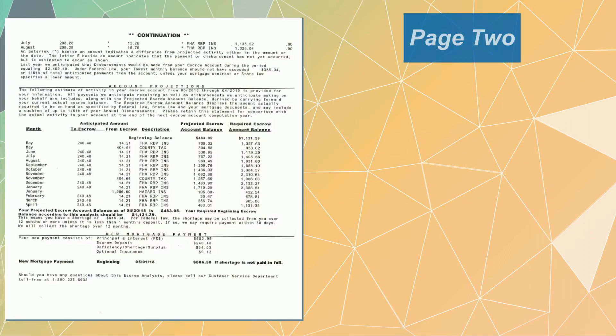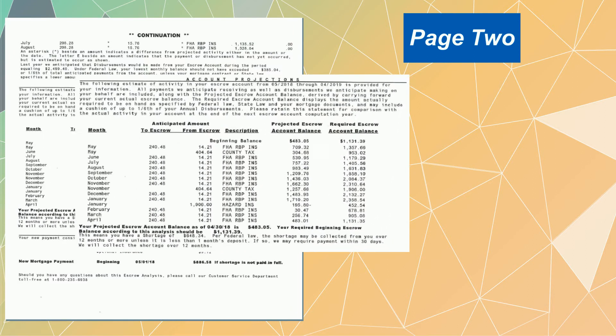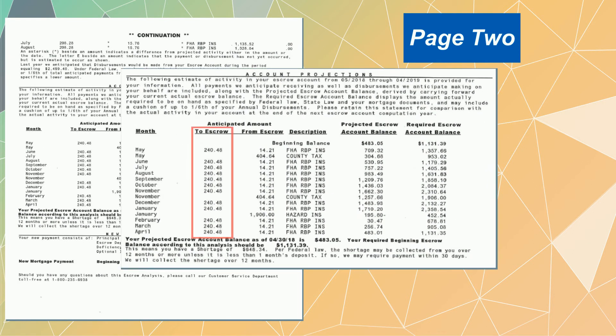The second page of the escrow disclosure lists the projected amount of money that will be placed into your escrow account each month and the expenses Virginia Housing will pay on your behalf over the course of the next year.